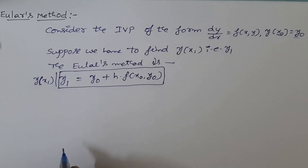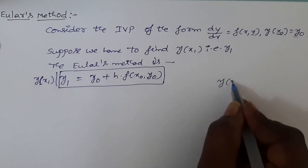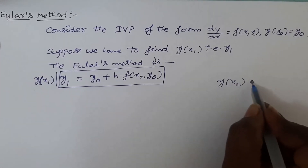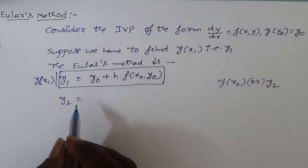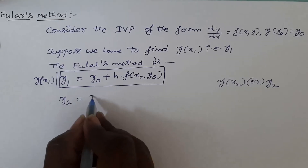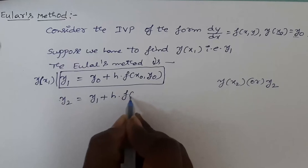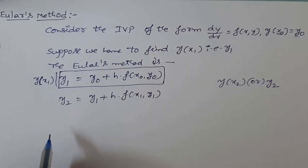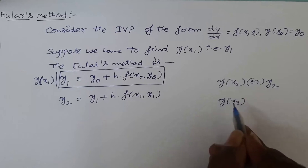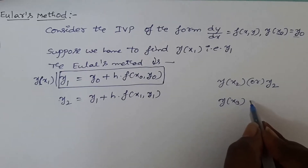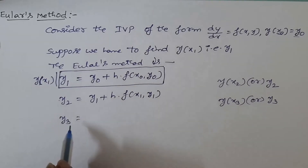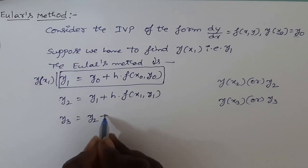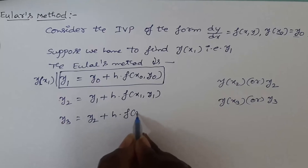Suppose we have to find out the value of y at x₂. The y value at x₂ is also represented by y₂. Then according to Euler's method, the formula for y₂ becomes y₁ plus h into f of x₁ comma y₁. Similarly, suppose we have to find the value of y at x₃, also known as y₃. In this case we can use y₂ and x₂ as initial conditions, so it becomes y₂ plus h into f of x₂ comma y₂.